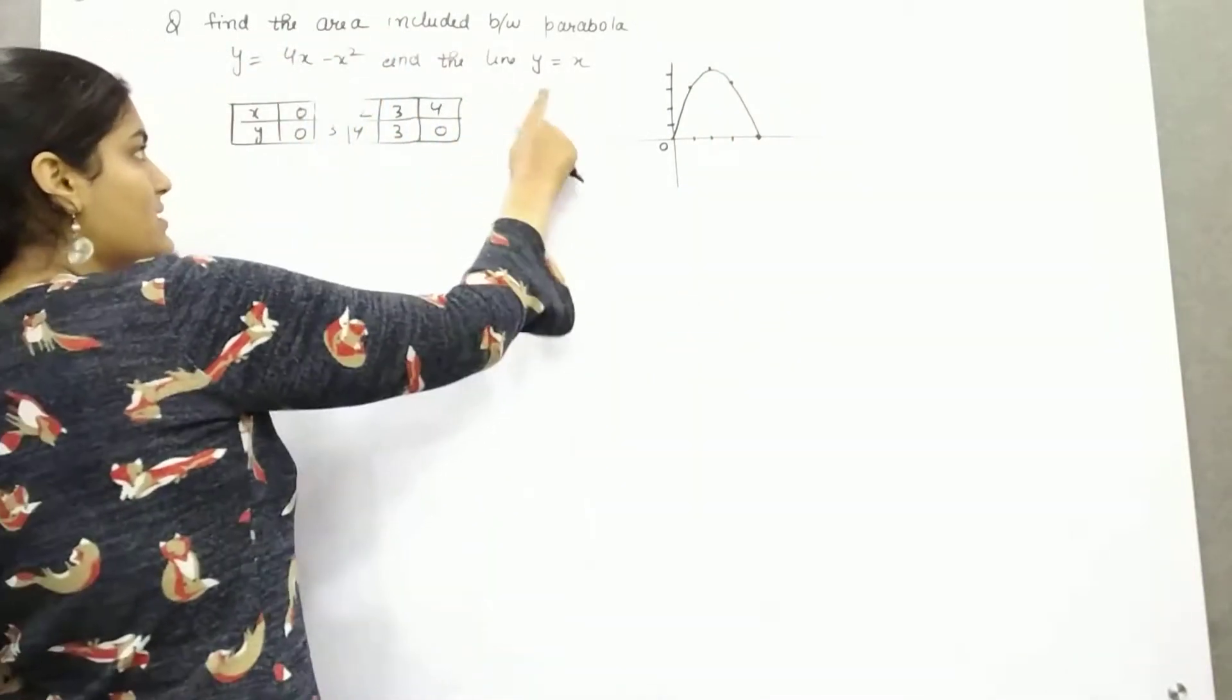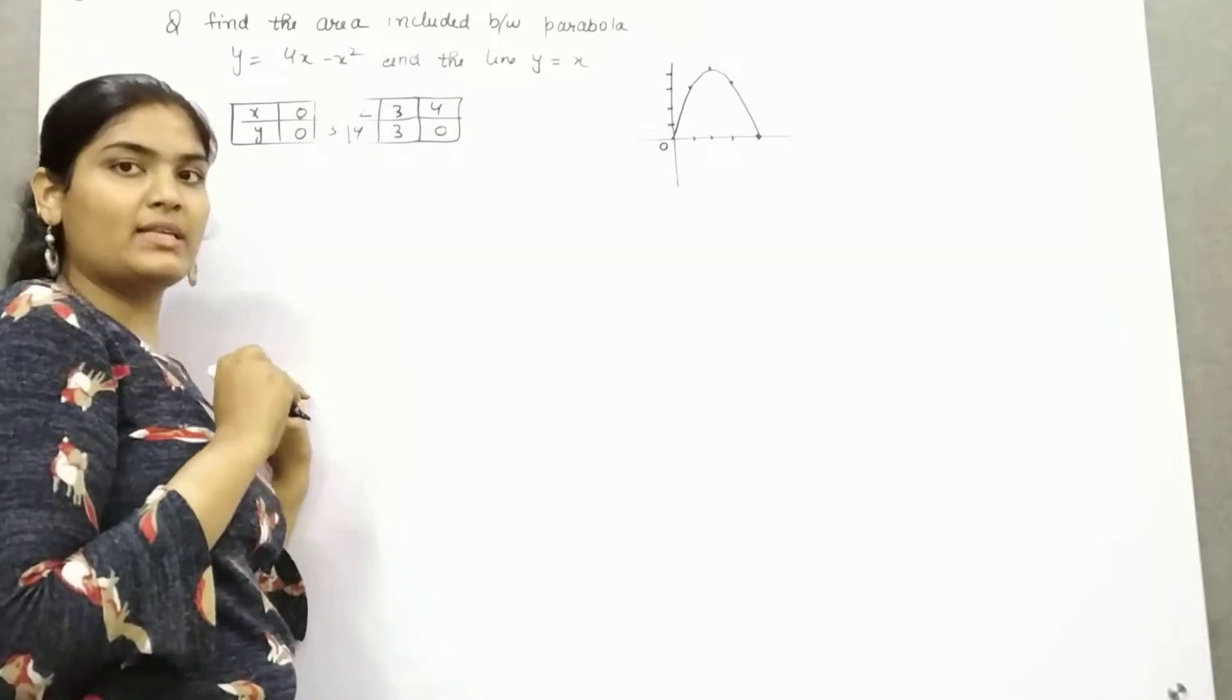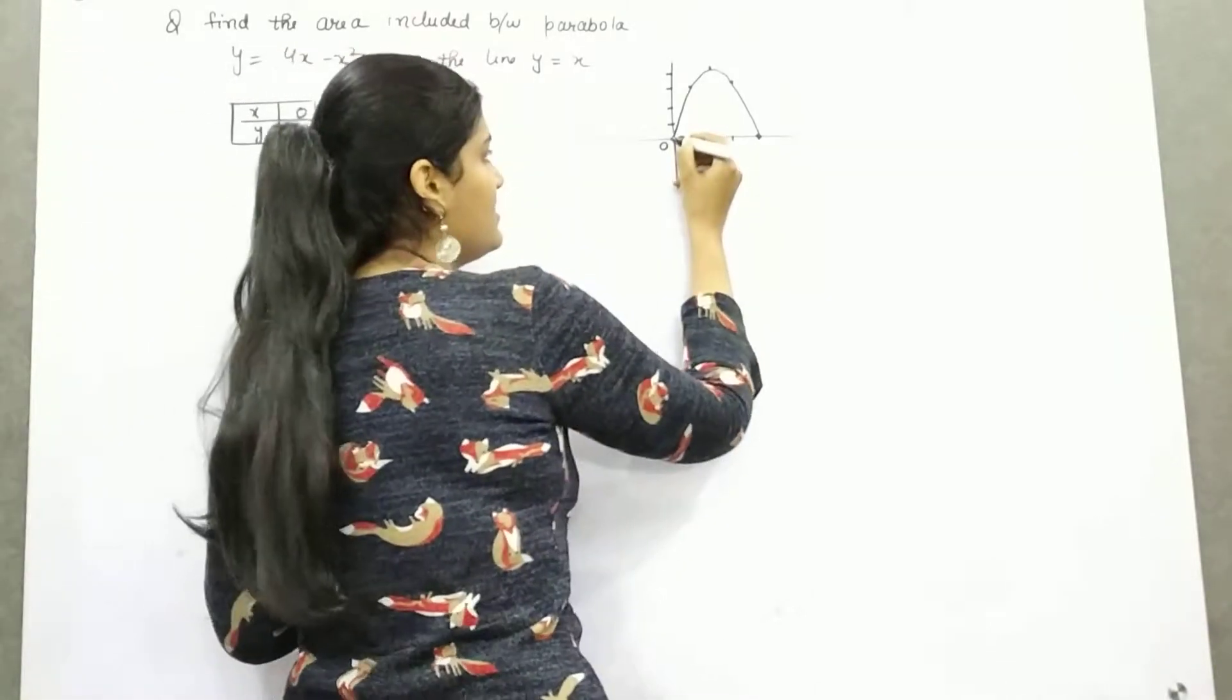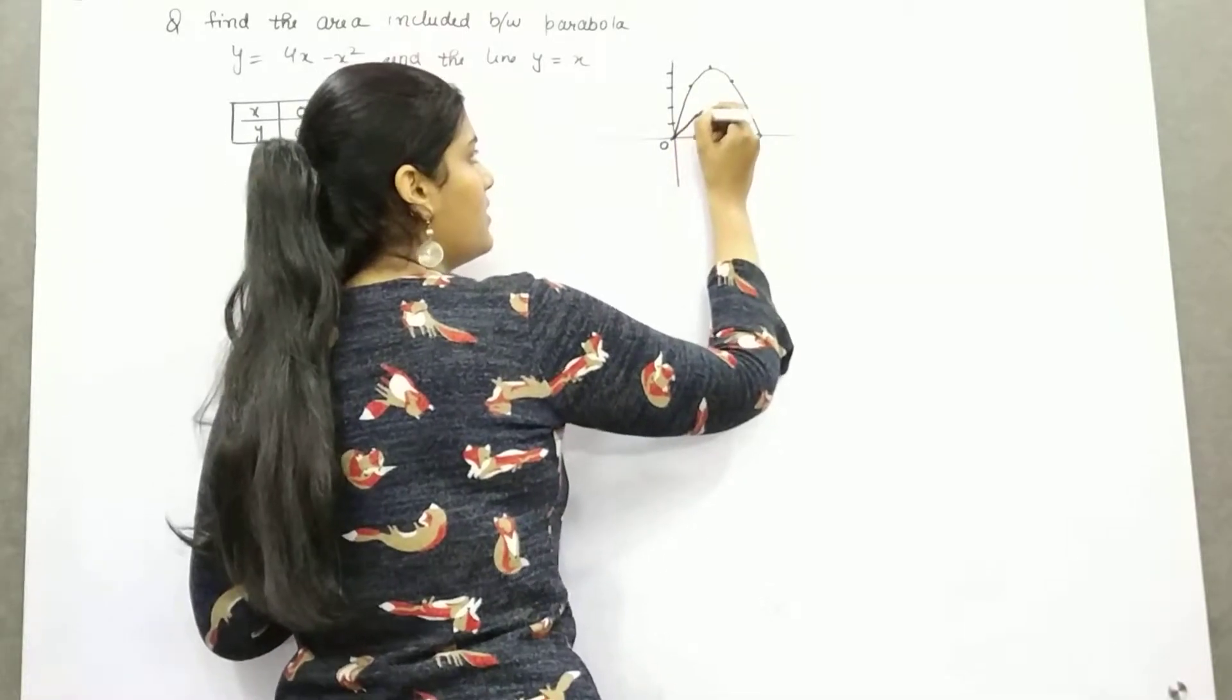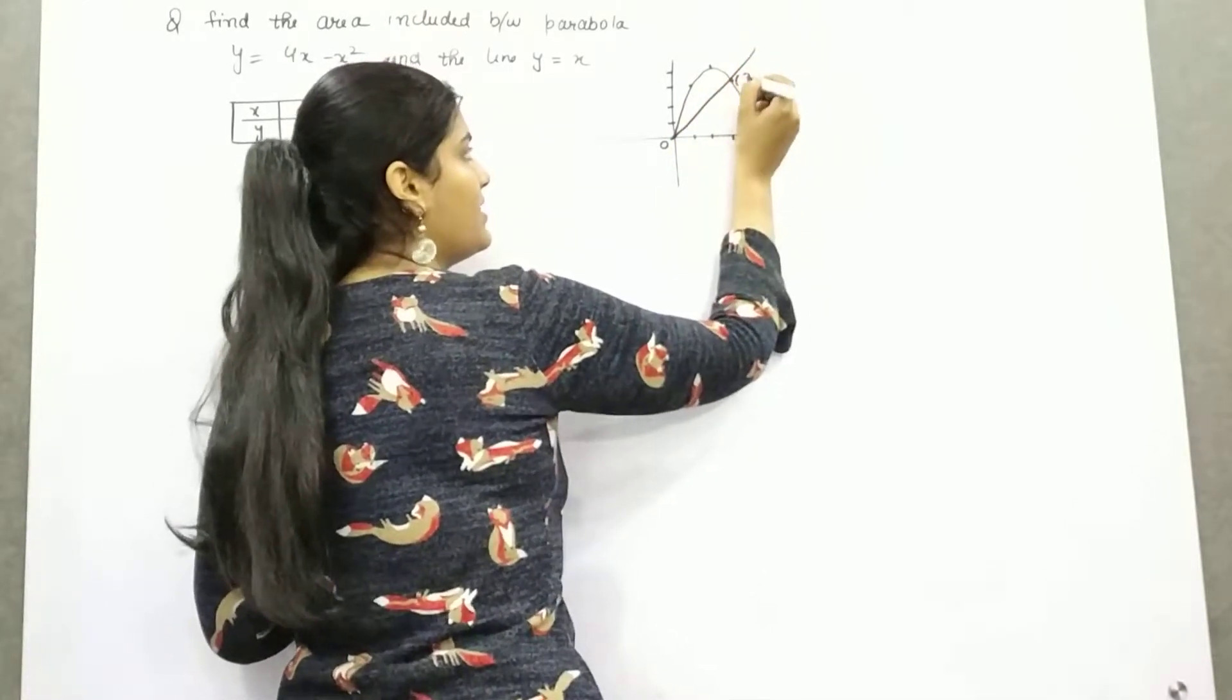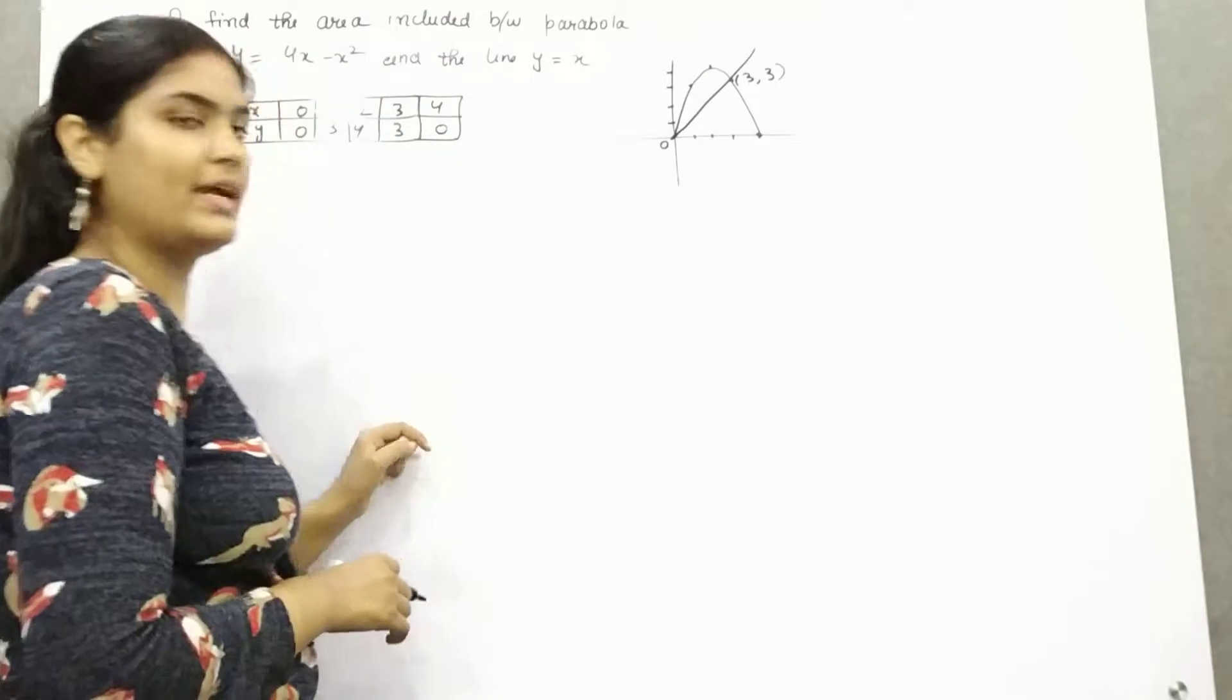And because this is y equals x line, that means if y is 0, x is 0, y is 1, x is 1. So this is a straight line and the intersection point will be (3,3).